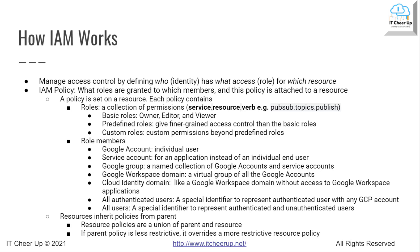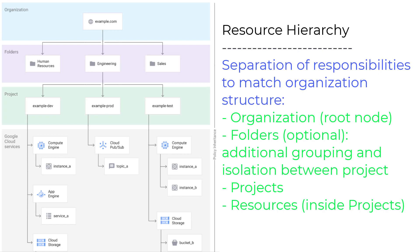In IAM, you grant access to members. Members can be a Google account for individual users, a service account for an application instead of an individual end user, a Google group — a named collection of Google accounts and service accounts — a Google Workspace domain, a virtual group of all Google accounts, or a Cloud Identity domain like a Google Workspace domain but without access to Google Workspace applications. There are also all authenticated users, representing authenticated users with any GCP account.